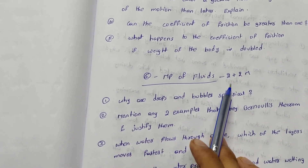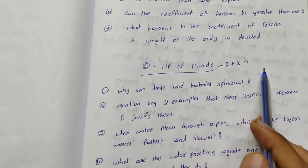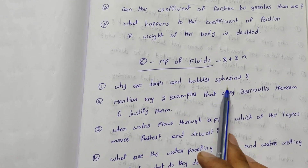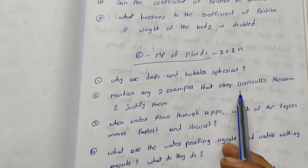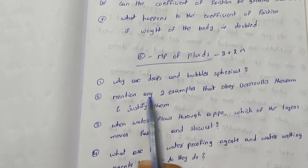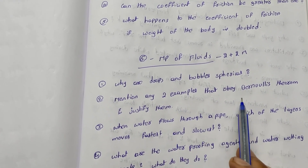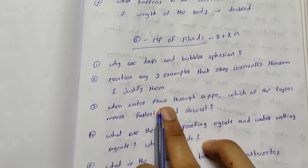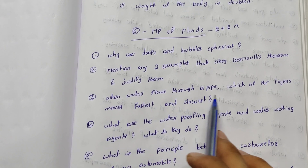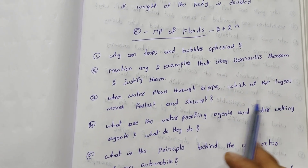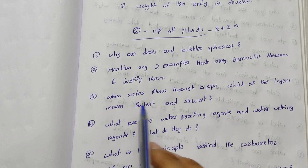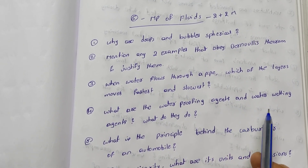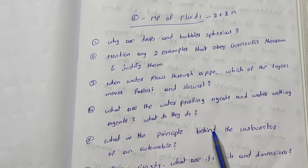Mechanical properties of fluids — two marks, two questions. Why are drops and bubbles spherical? Mention any two examples that obey Bernoulli's theorem and justify them. When water flows through a pipe, which of the layers moves fastest and slowest? What are waterproofing agents and water wetting agents? What do they do?